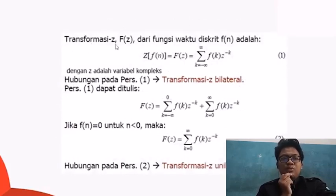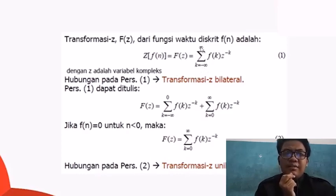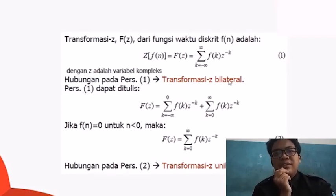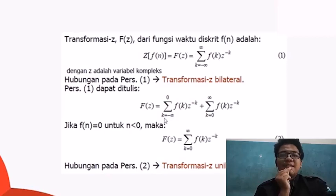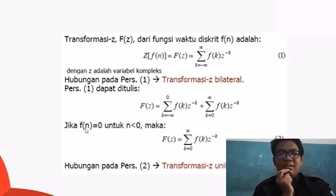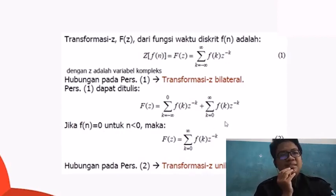Kawasan Z-plane terbentuk polinomial, dimana dibentuk dari sekuens berupa X pangkat N, X pangkat N-1, dan lain-lain. Untuk transformasi Z atau F(Z) sendiri dari fungsi waktu diskret F(N), terdapat dua persamaan untuk F(Z) dan F(K), dimana perbedaan itu ditimbulkan karena transformasi Z bilateral, yaitu S(K) sama dengan S(K) dikali Z pangkat negatif K, dimana Z adalah variabel kompleks.